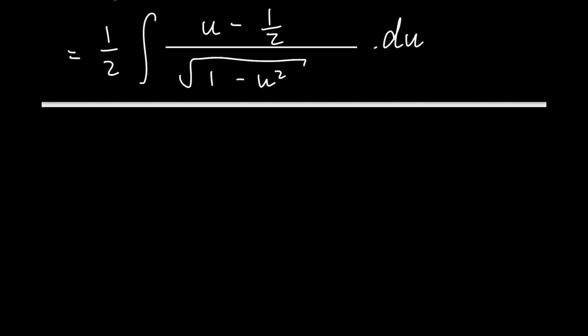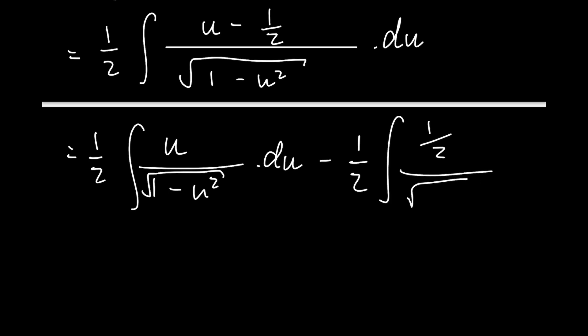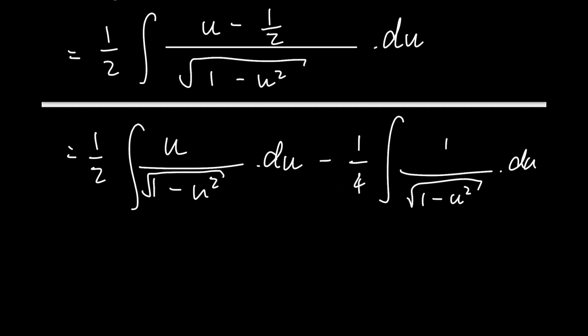Now this integral has a fraction within it that can be split into 2. So we can split the integral into 2. We have 1 over 2 into the integral of u over the square root of 1 minus u squared du, minus 1 over 2 into the integral of 1 over 2 over the square root of 1 minus u squared du. Now we can take this 1 over 2 out — it's a constant — so 1 over 2 times 1 over 2 is 1 over 4. This integral is the derivative of arc sine, so we get minus 1 over 4 arc sine of u.